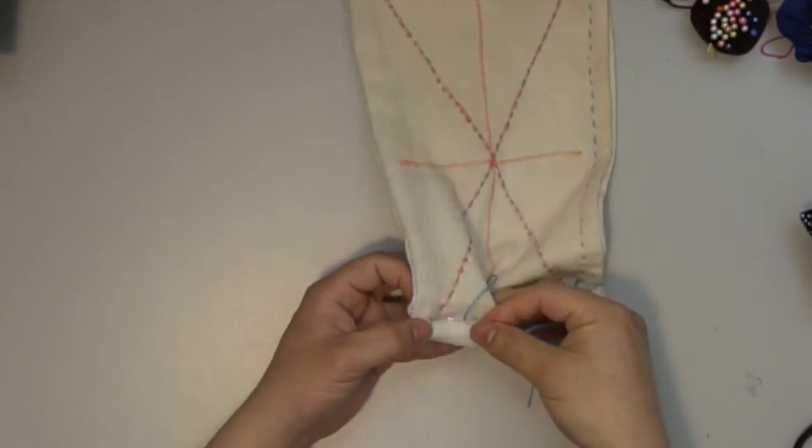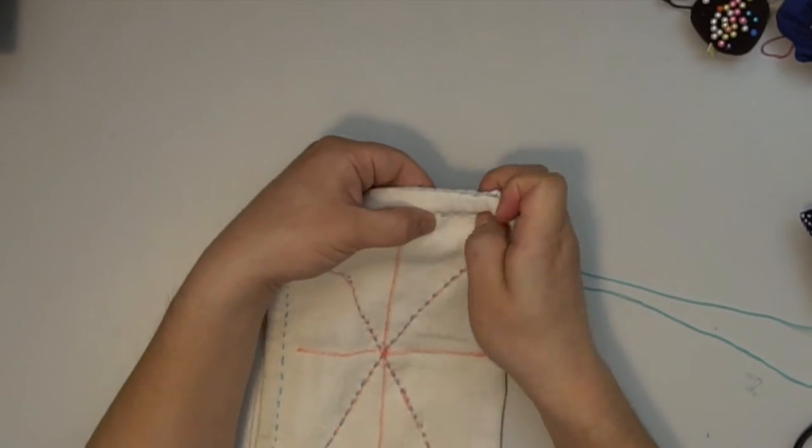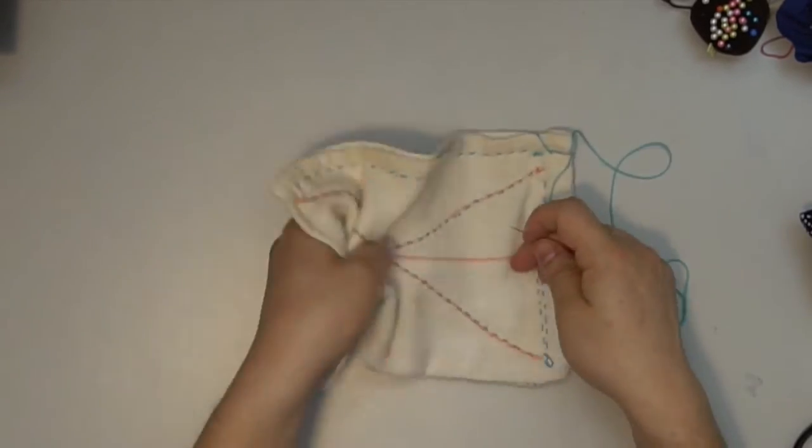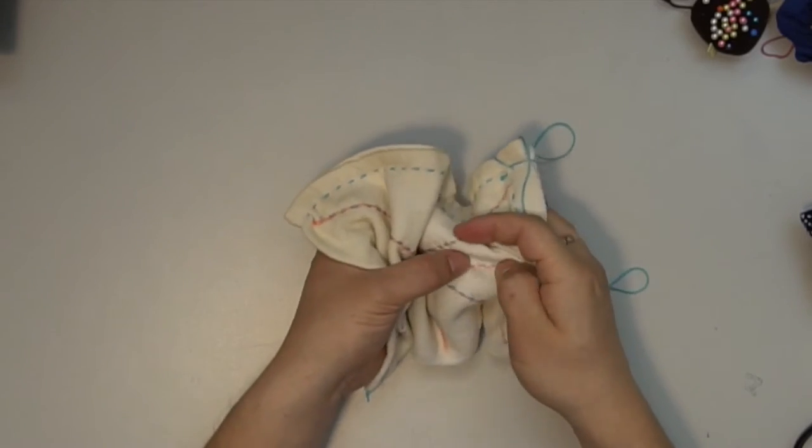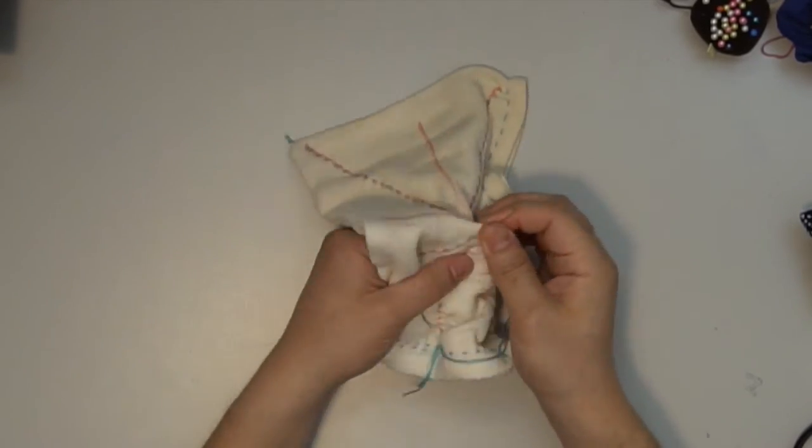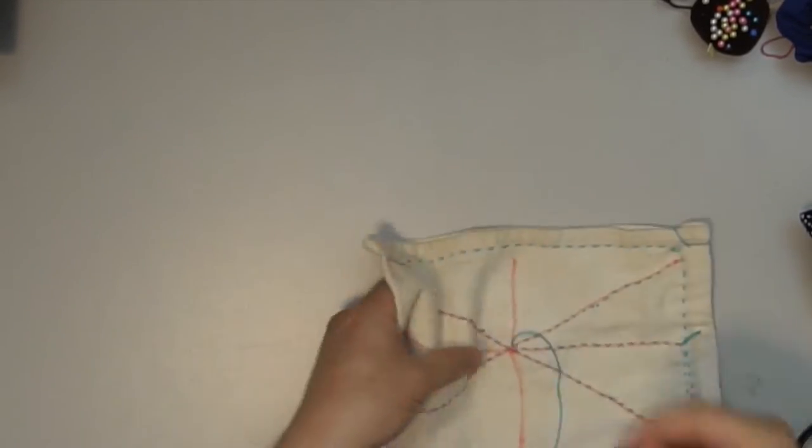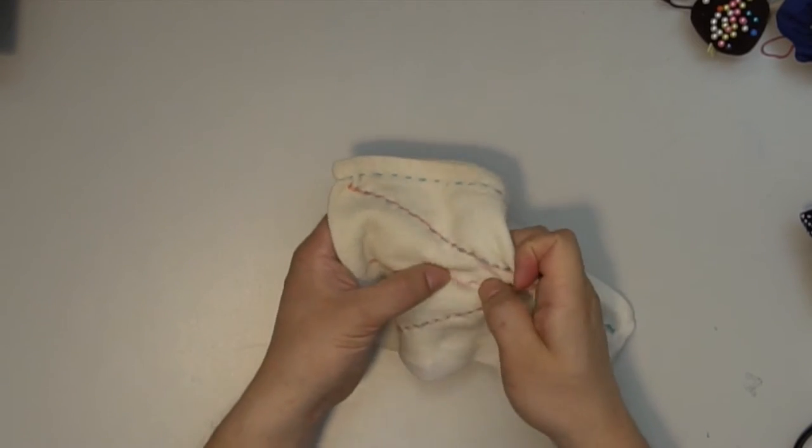One big advantage of hand stitching is the durability of Zoukin. The bigger stitches made by hand will be more flexible in terms of tensioning the fabric in the water. The machine stitches can result in destroying the fabric over time.